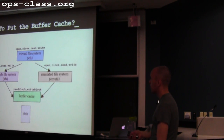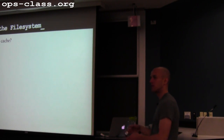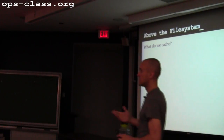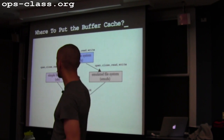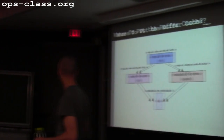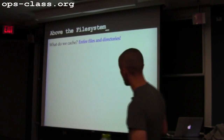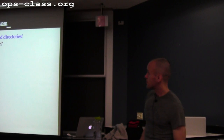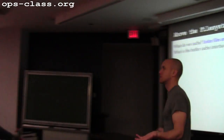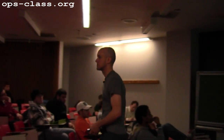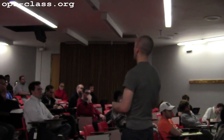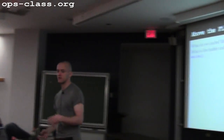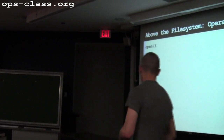If I'm above the file system, what objects am I caching conceptually? Files — the operations I'm seeing are file-level operations: open, close, read — they operate on files with a file abstraction. So I'm caching files and directories. The buffer cache interface has to support the file system file interface: open, close, read, write. The buffer cache is going to try to return contents from memory rather than going to disk — that's the goal.